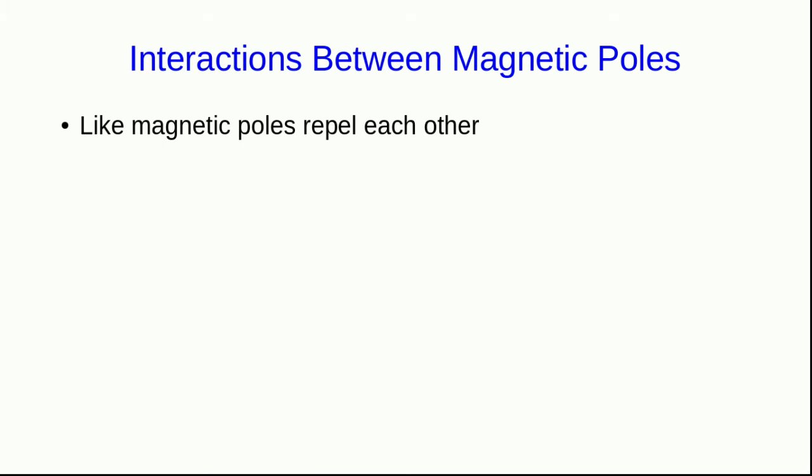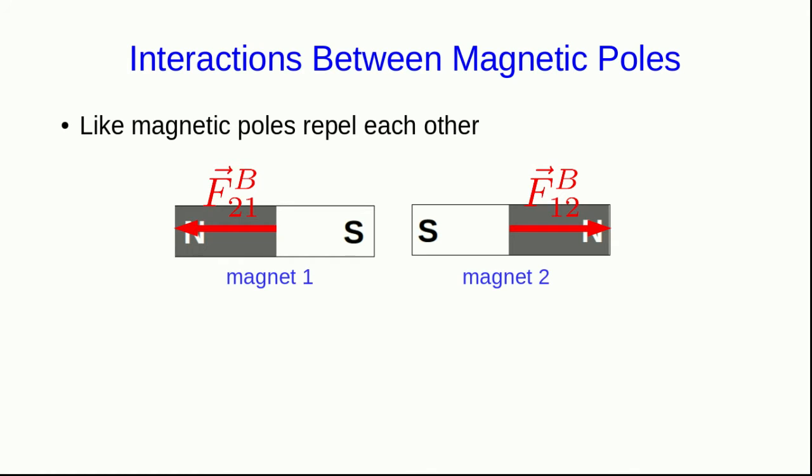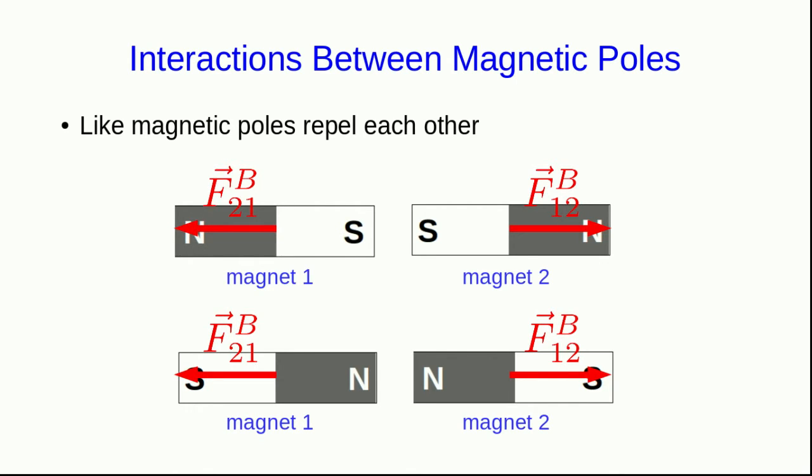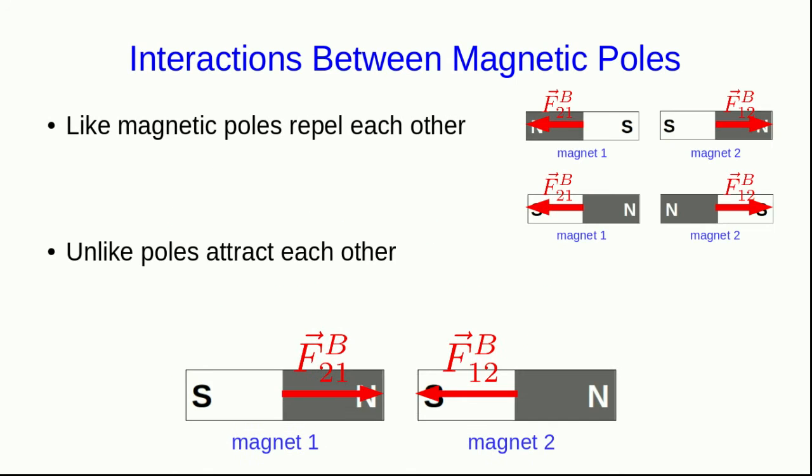Even briefly playing around with two magnets shows you that like magnetic poles repel each other, so two south-seeking poles will repel, and two north-seeking poles will repel, whereas unlike poles attract each other. You may notice that in these forces I'm using B to represent magnetic forces. Why B? Why not M? Well, don't worry about it. It's historical.